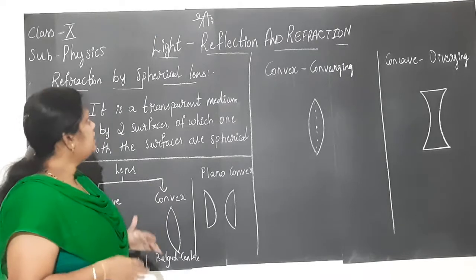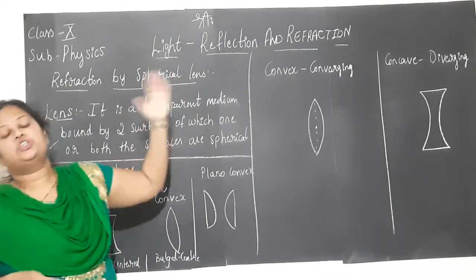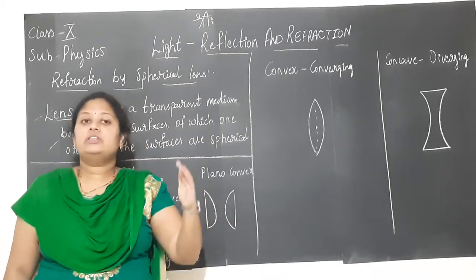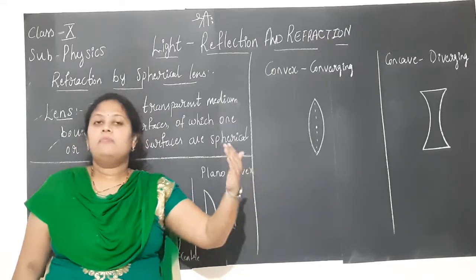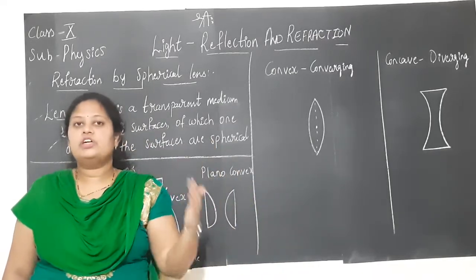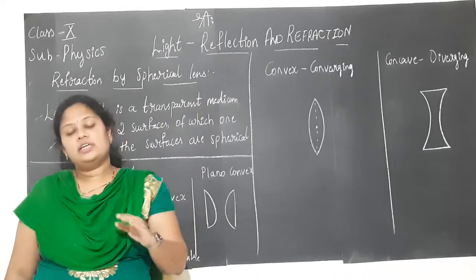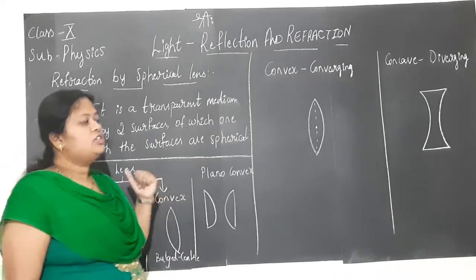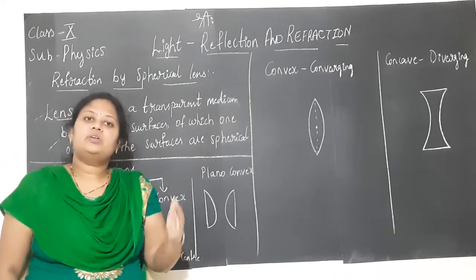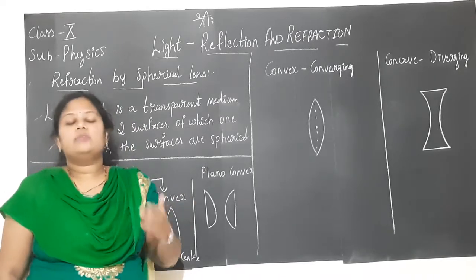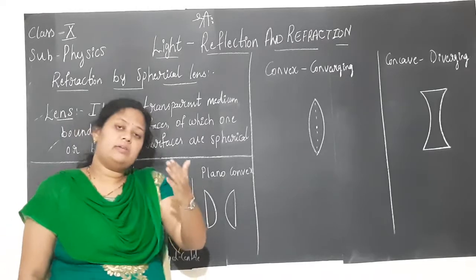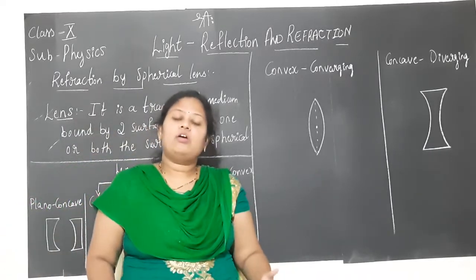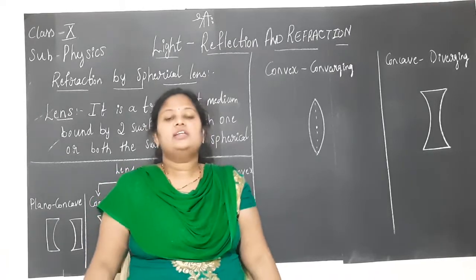In today's session, we shall be discussing the process of refraction by spherical lens. We have already studied the process of reflection with respect to spherical mirrors. Mirrors have one side silvered or polished for reflection. But in case of refraction, we are talking about transparent mediums. We will be learning about one such transparent medium today — that is glass.